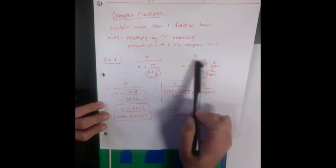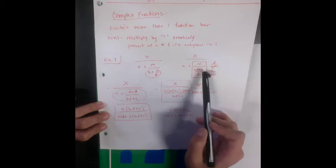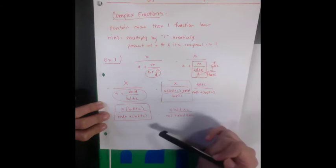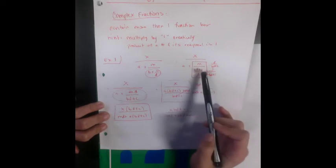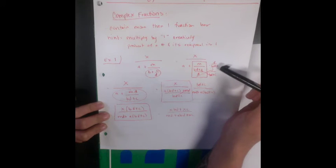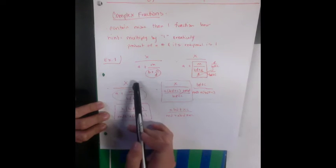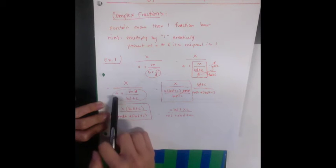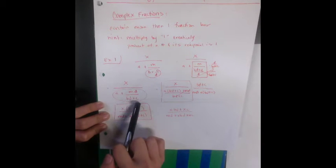And in this box here I want to simplify this so that I don't have a fraction in my denominator. So I multiply by the reciprocal of my denominator which is d over bd plus c. If I do that here I have x over a plus m over bd plus c over bd plus c.